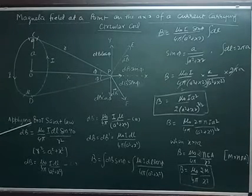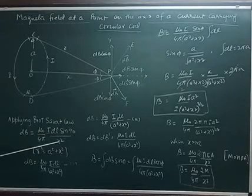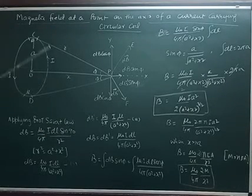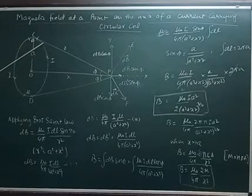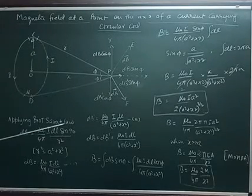dB equals μ₀ upon 4π times I dL sin θ upon R squared. Here θ is the angle between dL and R. So it is π/2 or 90 degrees, so sin 90 is 1.